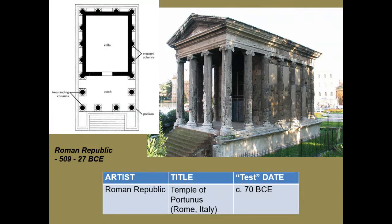Instead of having terraced steps allowing entry from all four sides, this temple is raised up on a platform with a single staircase at the front. We also don't have columns running all the way around the outside. Instead, the illusion of a continuous colonnade is achieved by the addition of what we call engaged columns — not structural, but decorative elements on the outer wall of a much expanded cella. The only people allowed inside would be the priests, so worship still takes place outside.